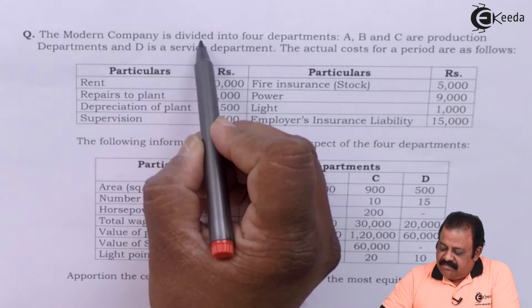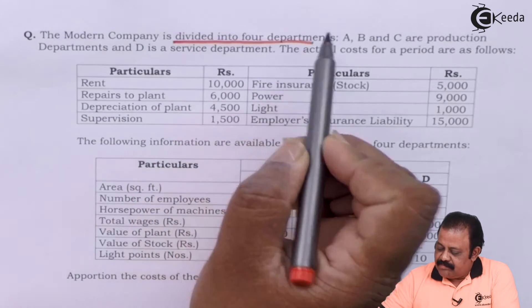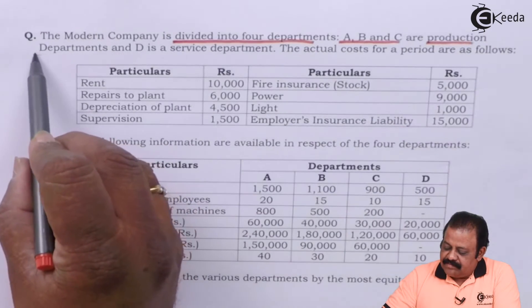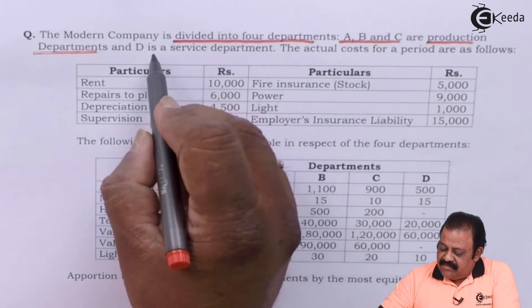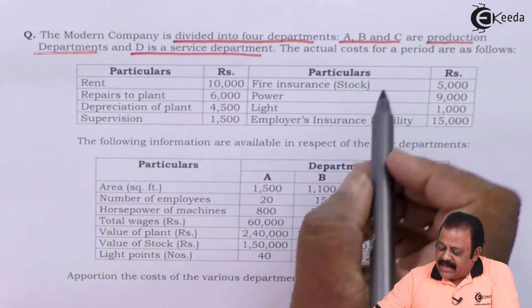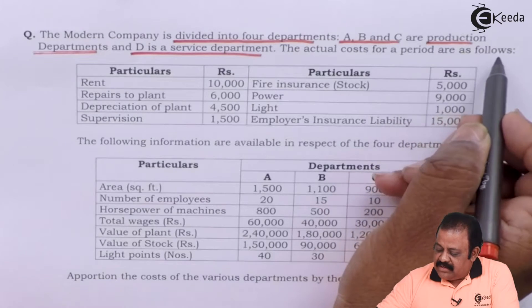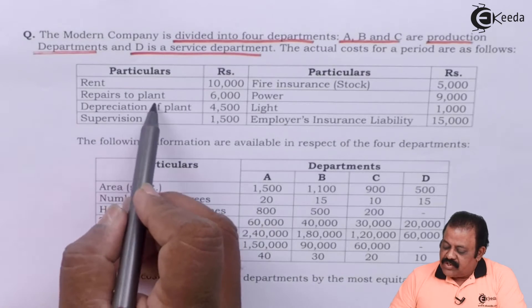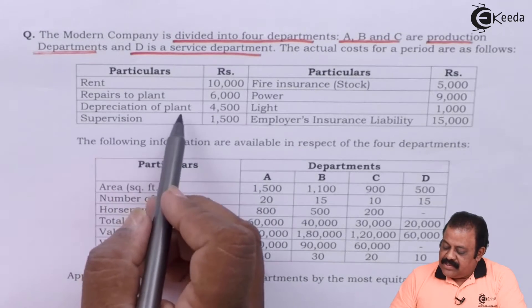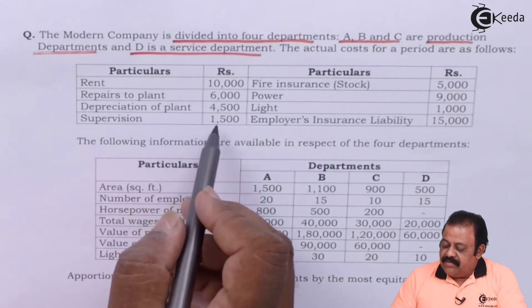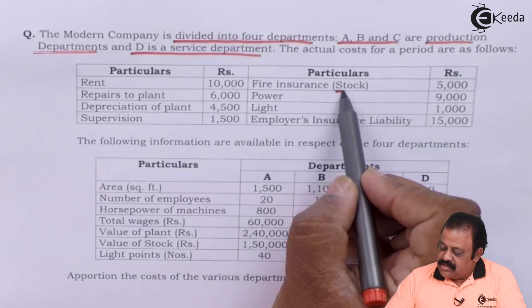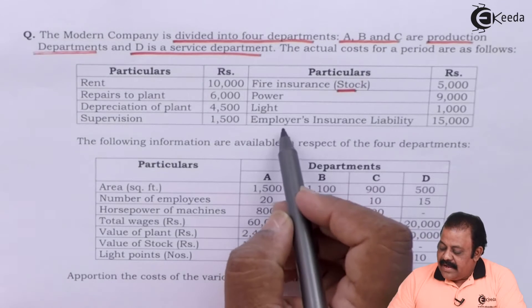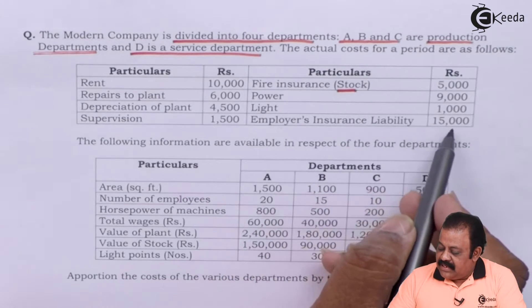The Modern Company is divided into four departments. A, B, C are production departments and D is a service department. The actual costs for a particular period are given: rent 10,000; repairs to plant 6,000; depreciation on plant 4,500; supervision 1,500; fire insurance of stock 5,000; power 9,000; light 1,000; employers insurance liability 15,000.